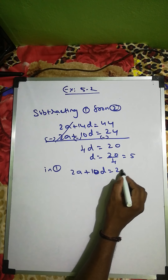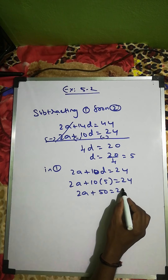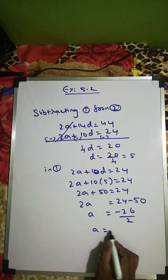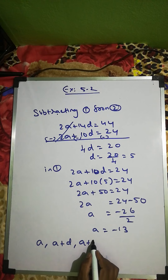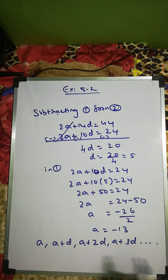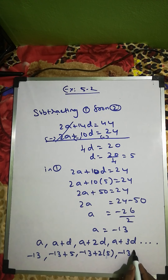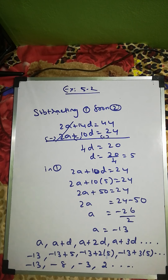Substituting d = 5 into equation one: 2a + 10×5 = 24, so 2a + 50 = 24, giving 2a = -26, therefore a = -13. The AP is a, a+d, a+2d, a+3d = -13, -8, -3, 2, and so on.